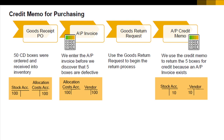We cannot create a goods return with reference to the goods receipt PO since an AP invoice already exists. The AP credit memo has the same effect as a goods return — the credit memo updates the stock quantities and corrects the values in accounting.